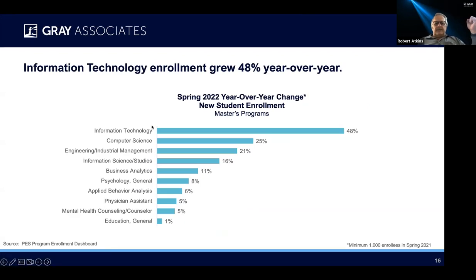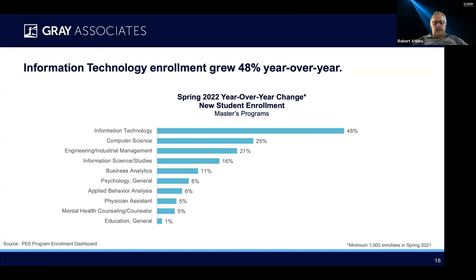What grew the fastest? Again, you see this trend — information technology, computer science, a little bit further down the page, business analytics. So real interest in those three areas, both in terms of overall size and growth. Then we see a few other things: industrial engineering and management, psychology, applied behavior analysis, and a program that I find very interesting — physician assistant. I think it's one of the ways we can start to close the gap that we have in the healthcare community, shortage of doctors basically. And I think that's going to end up getting filled by physician assistants and nurse practitioners. Health medical counselor, and finally education, up 1%. These are very large programs in computer science and information science studies and business analytics, still growing 11 to 25%.